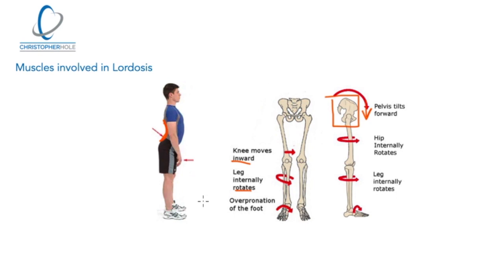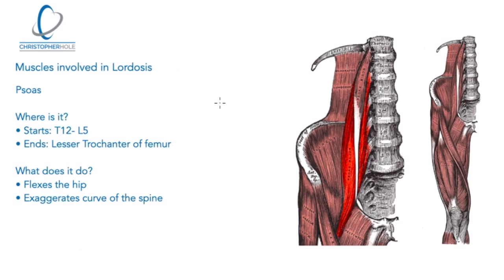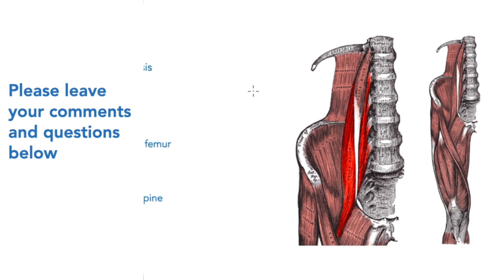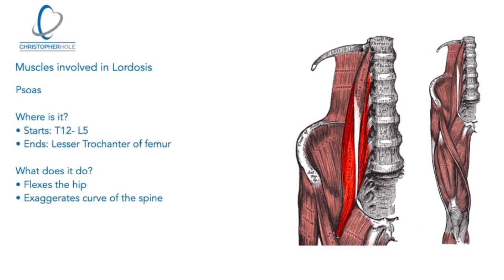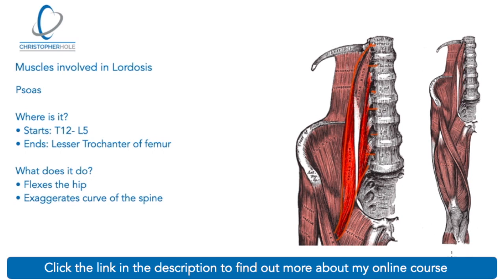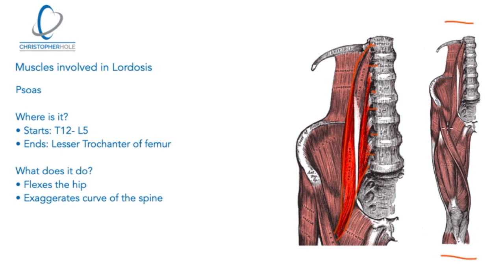The first muscle we're looking at is the psoas, and it's the muscle that exaggerates the curve of the lumbar spine. Looking at this image, we can see the muscle going right up through the pelvis and joining onto all lumbar vertebrae and the bottom thoracic vertebra. Another image gives us perspective of the whole area — the psoas is coming up through this area, joining onto all lumbar vertebrae and the bottom thoracic vertebra. We also find connective tissue in the form of fascia that goes up into the diaphragm as well.